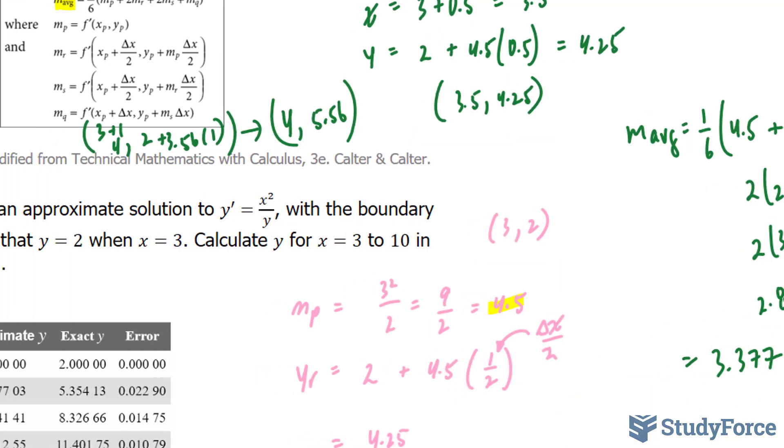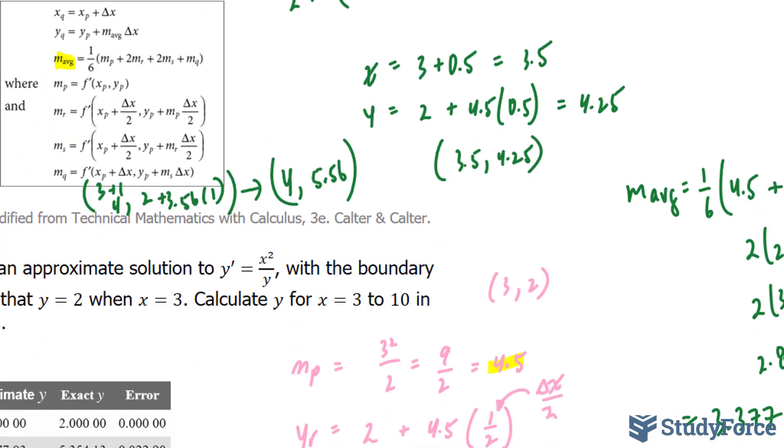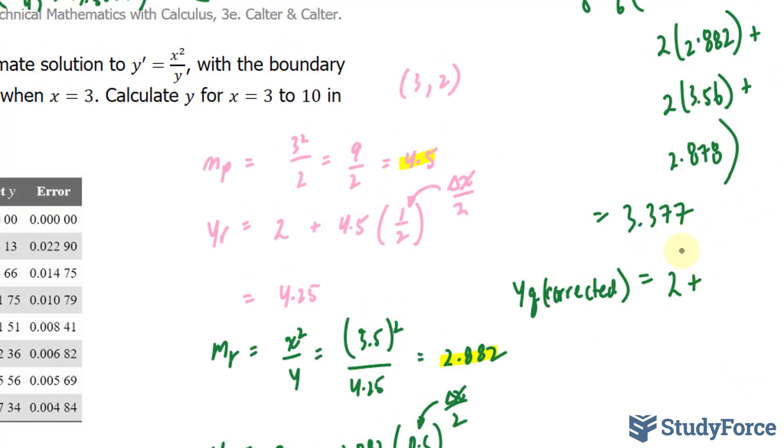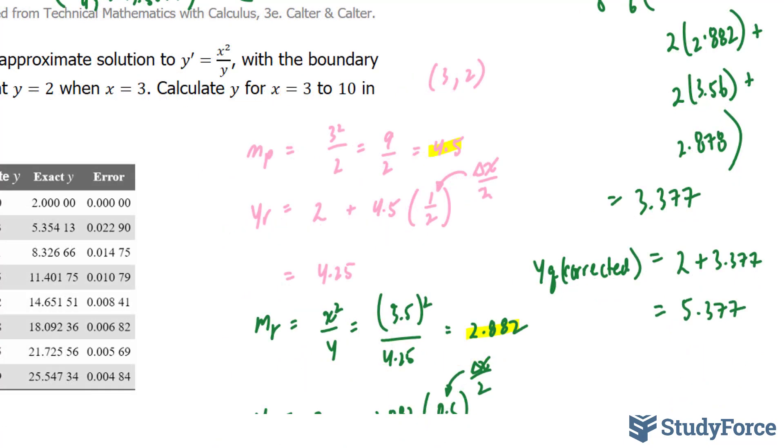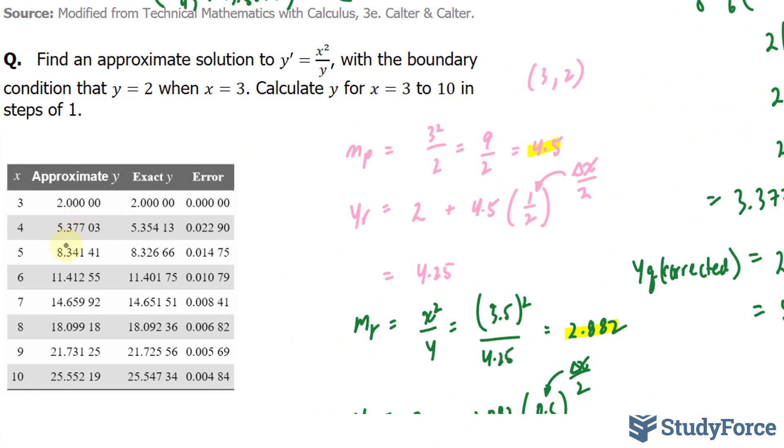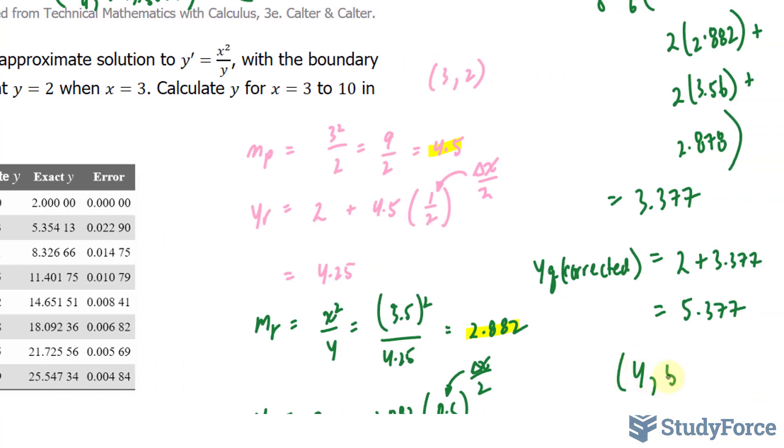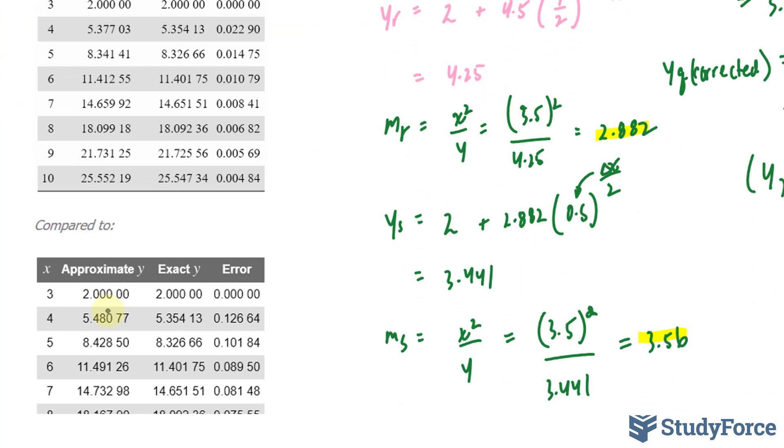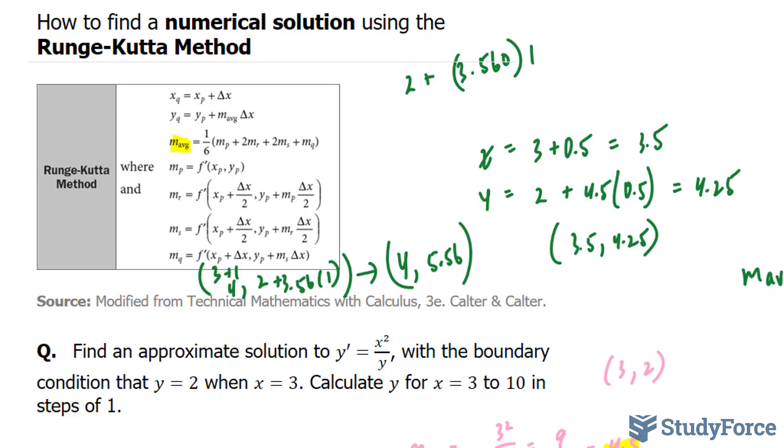Using what I just found, I'm going to correct what I got for y_q by writing out y_q corrected equals my previous y, which was 2, plus 3.377, and that will give us 5.377. Therefore, my second point, as shown in this table, is 5.377 with an x-coordinate of 4. Let's see how this compares to the modified Euler's method. In the modified Euler's method, we got 5.48, but this one appears to be more accurate. 5.377 is closer to 5.354 than that number is. And so there you have it. That is how to find a numerical solution using the Runge-Kutta method.